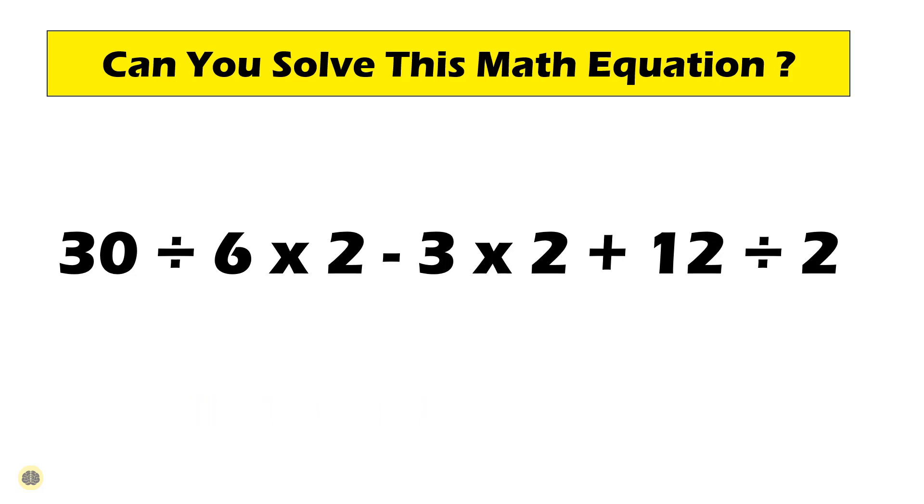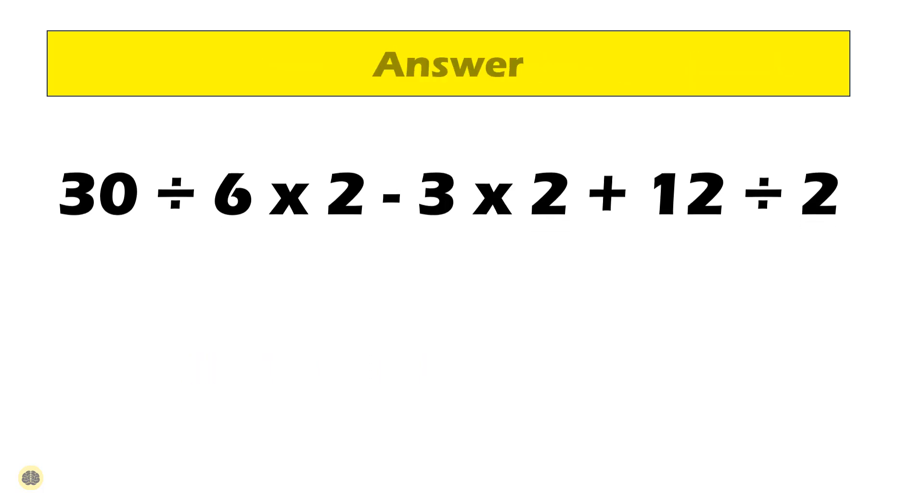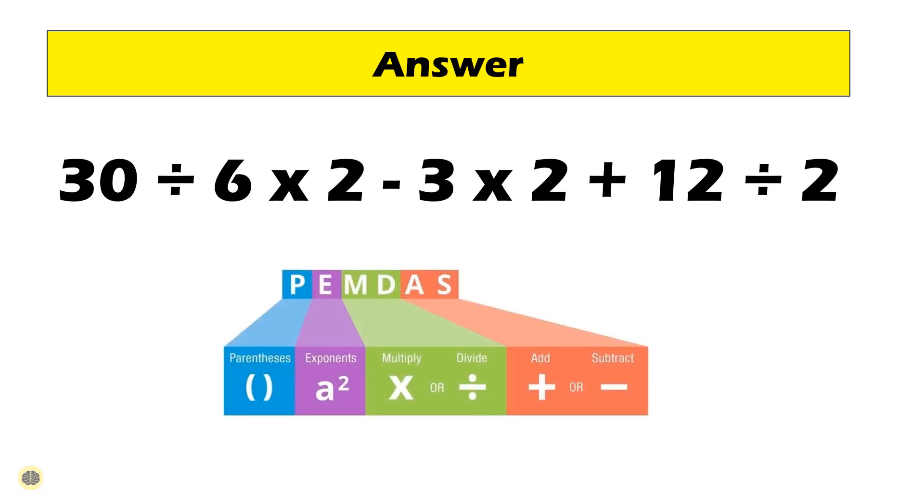To solve the expression, you need to follow the order of operations which is commonly remembered by the acronym PEMDAS. P stands for parenthesis first, E for exponents that includes powers and square roots. MD is for multiplication and division and final priority is for addition and subtraction in the given expression and all the rules will be applied from left to right.